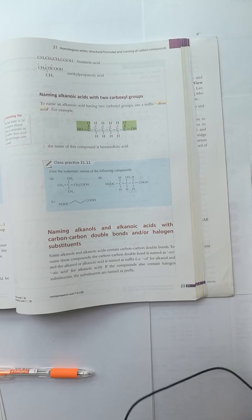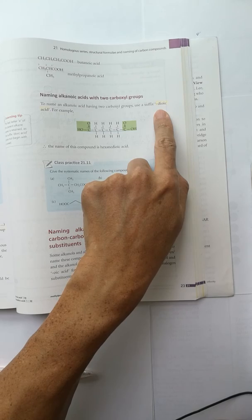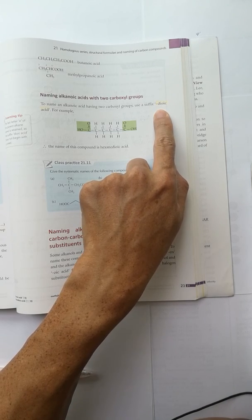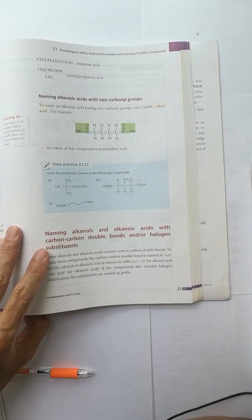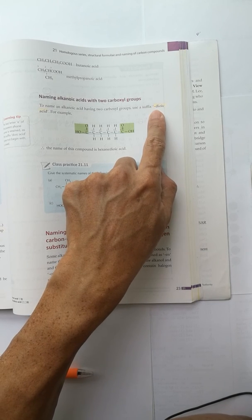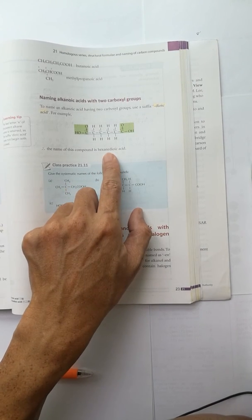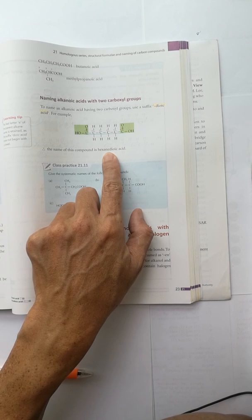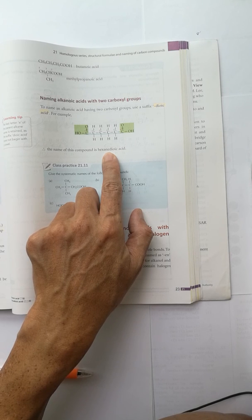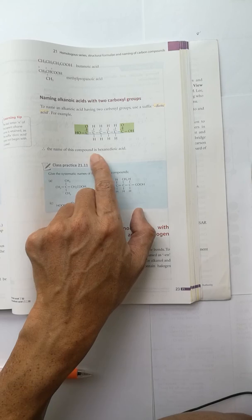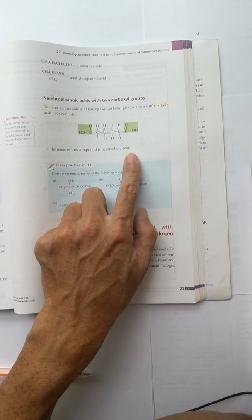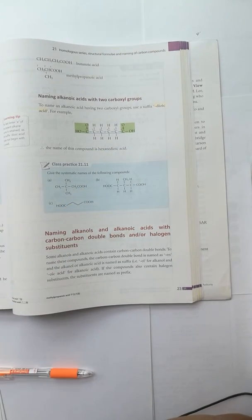Again, when you have two acid groups, you can use dioic acid. And di is not a vowel. In front of di, E should not be deleted. It is kept in the final name.